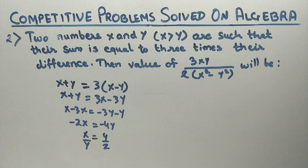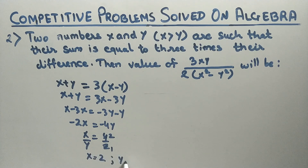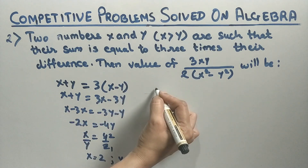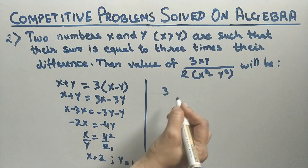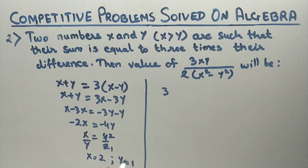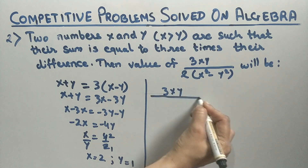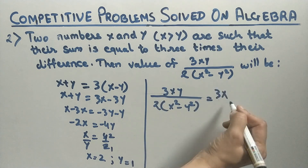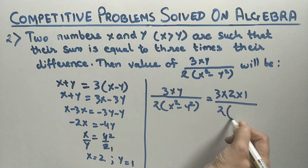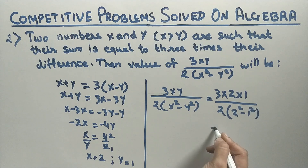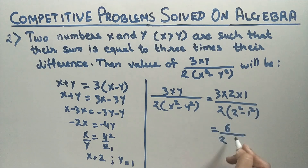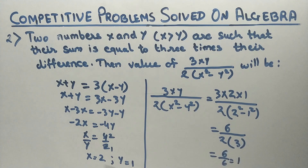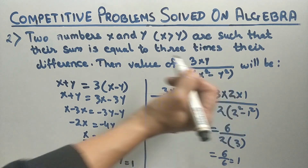So x = 2 and y = 1. Now we evaluate 3xy / (2(x² - y²)): substituting x = 2, y = 1, we get 3×2×1 / (2(2² - 1²)) = 6 / (2×3) = 6/6 = 1. So the value of 3xy / (2(x² - y²)) is 1.